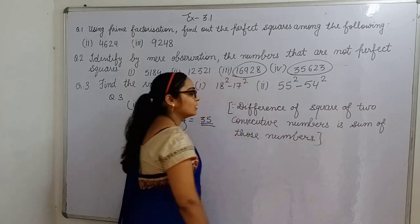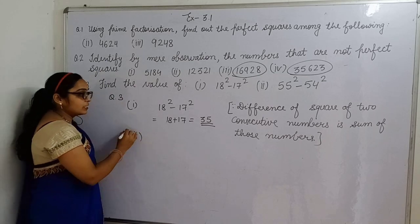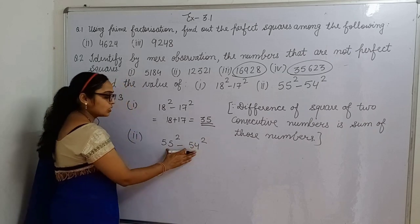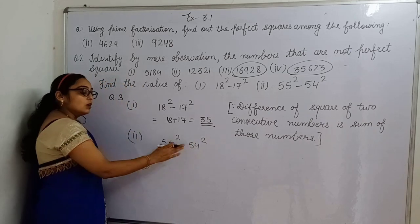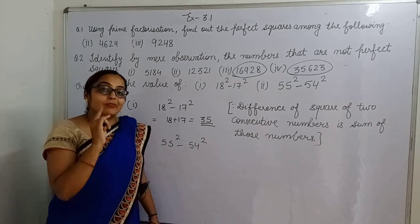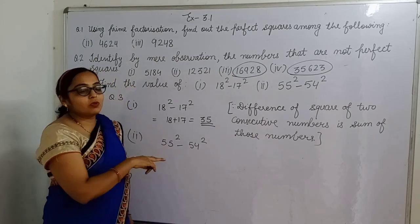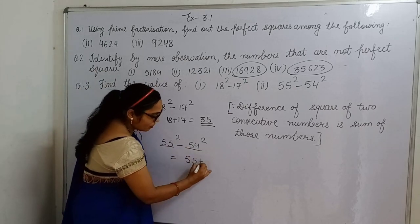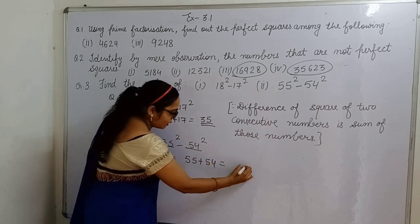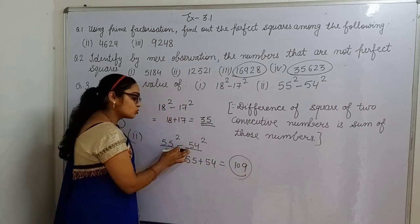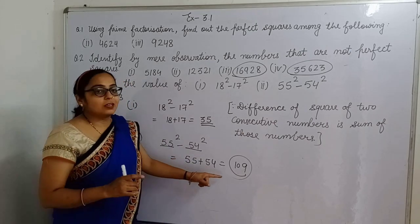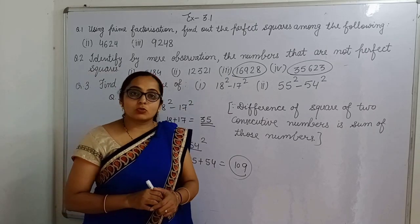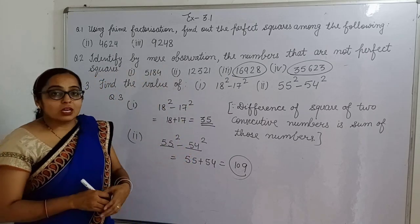Now let's take second example, second question: 55² - 54². These are consecutive numbers. Only this you can apply when we have given consecutive numbers. Only then you can apply this property. So add these two terms, 55 + 54, it is 109. Now students, rest of the parts you can solve yourself. I hope these three questions are clear to all.